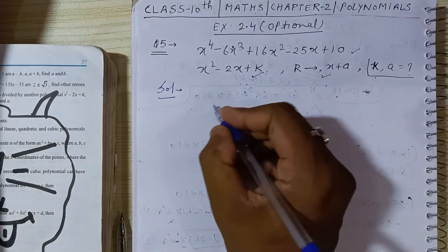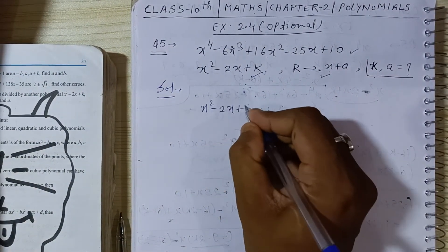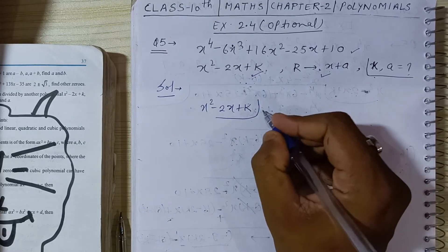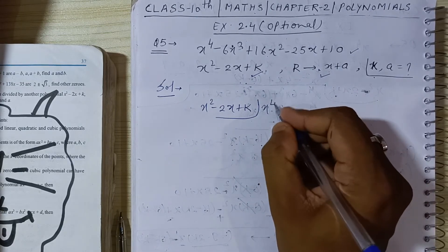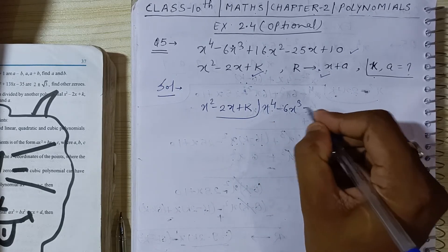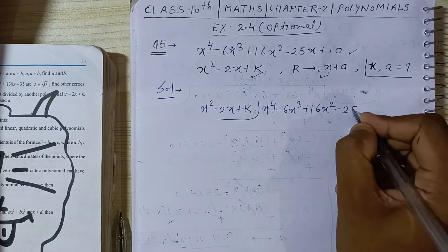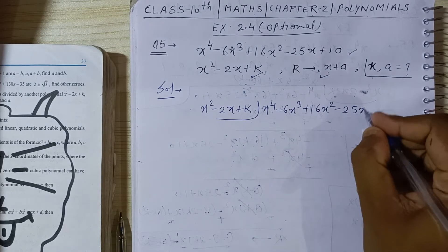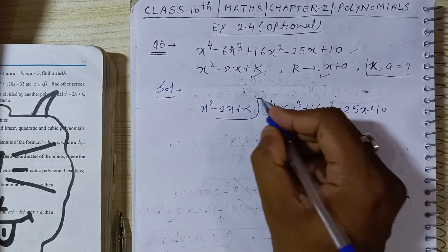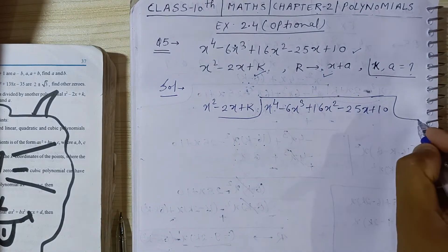So let's check and divide. We divide x squared minus 2x plus k into x to the power 4 minus 6x cubed plus 16x squared minus 25x plus 10. Let's see what we get.